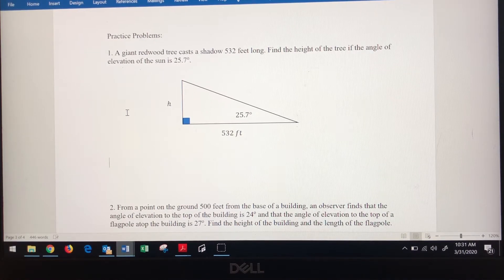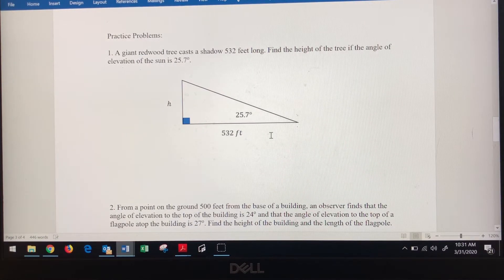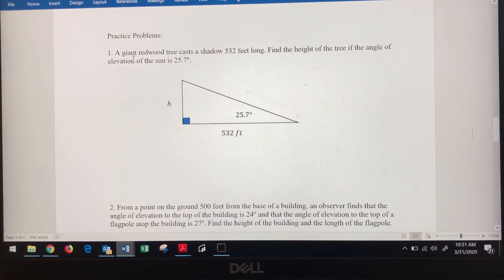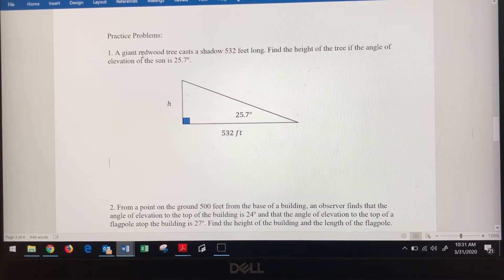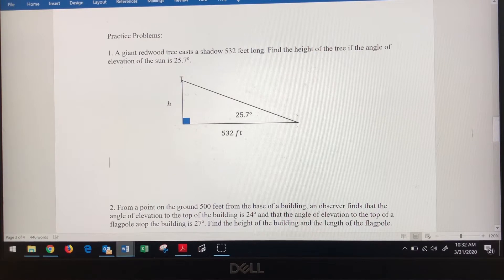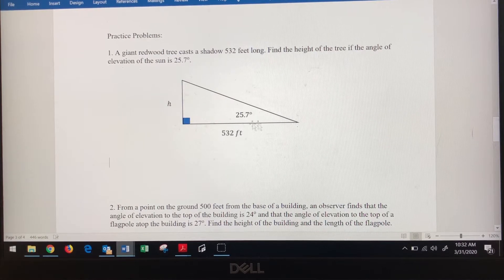First problem: we've got a giant redwood tree that's standing vertically here. It casts a shadow of 532 feet long. We want to find the height of that tree if the angle of elevation of the sun is 25.7 degrees. So in order to make this shadow here, the sun would have to be up here somewhere. And the sun hits the tree here and creates this 532 feet shadow.